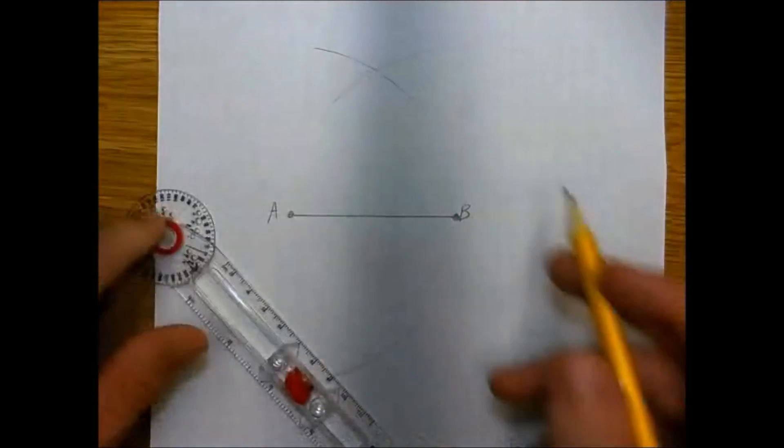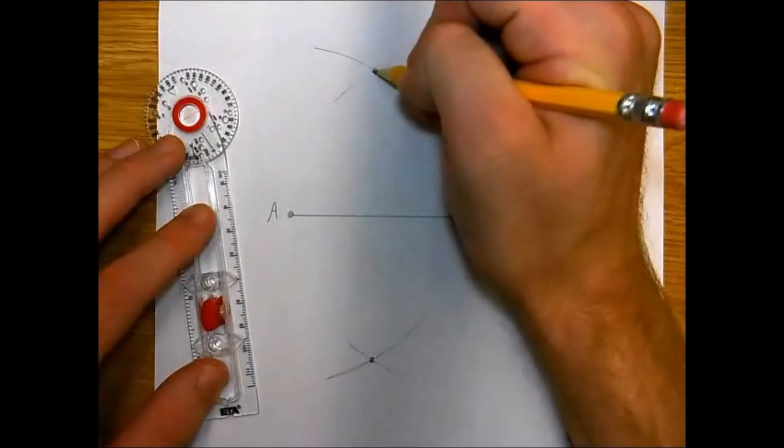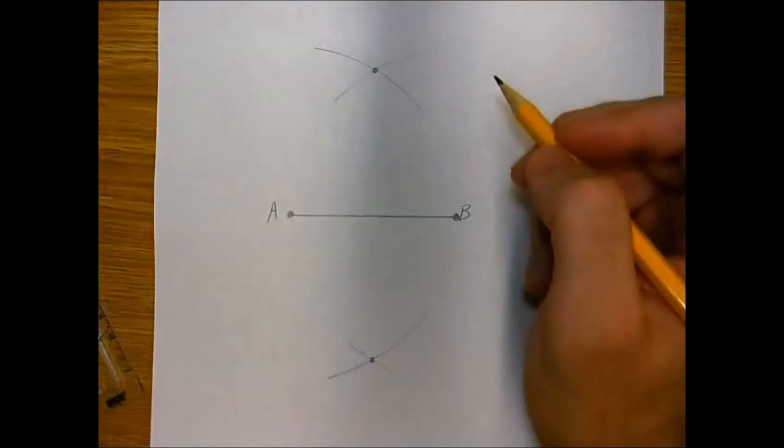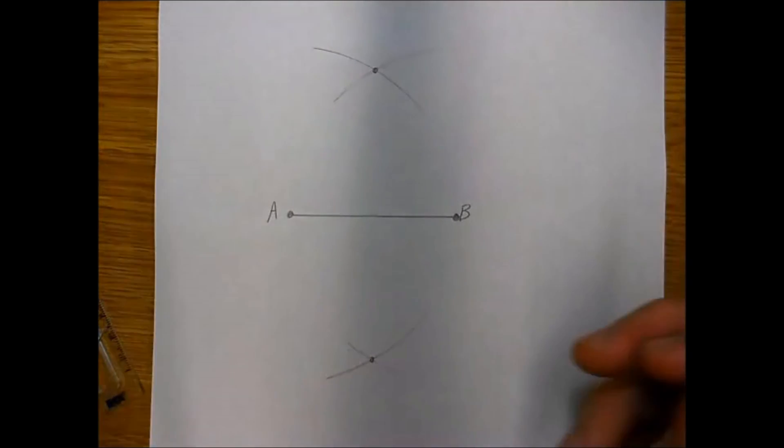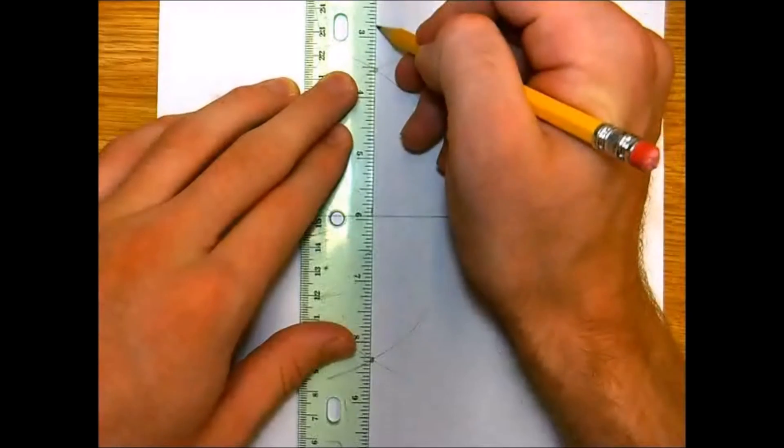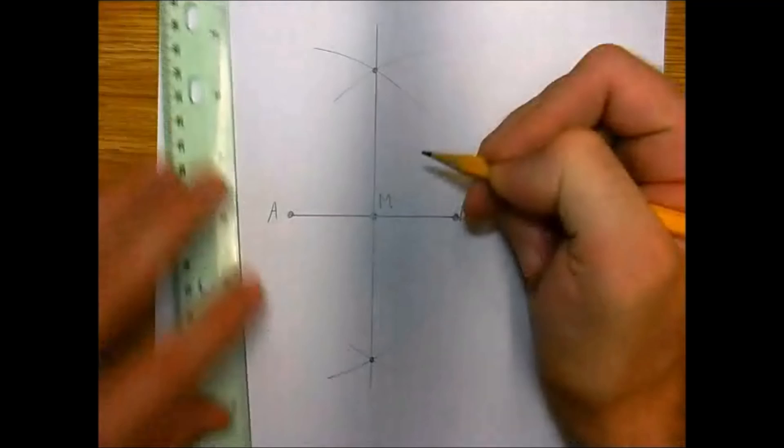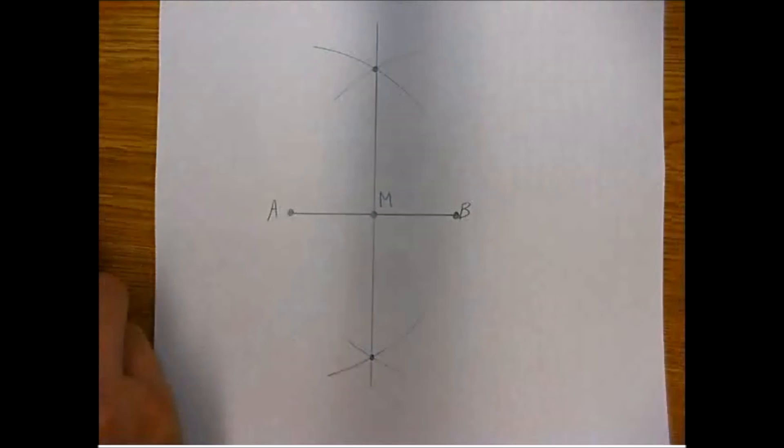Now these arcs are going to intersect at two locations. We're going to label those points and connect them with the straight edge. So we draw the line connecting those two intersection points and this line represents the perpendicular bisector of AB. It'll cut the line segment in half and form a 90 degree angle at M.